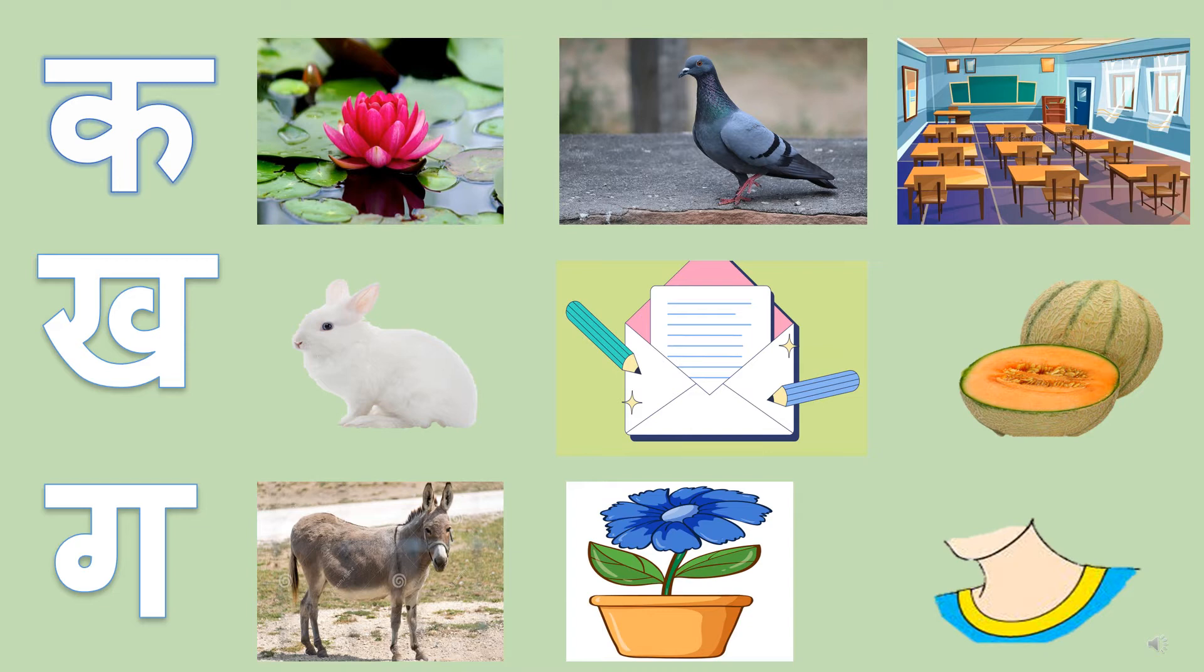K say Kargosh. Kargosh means Rabbit. K say Kth. Kth means Letter. K say Krabuja. Krabuja is Muskmelon.